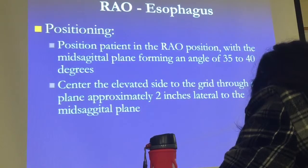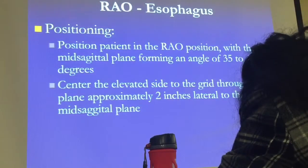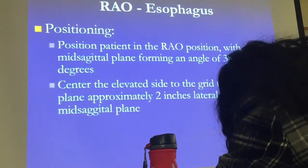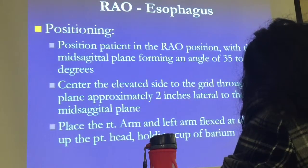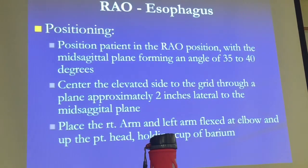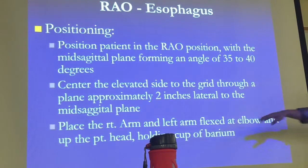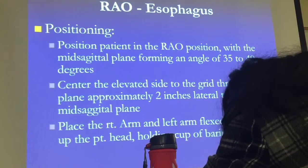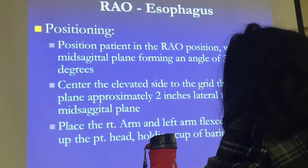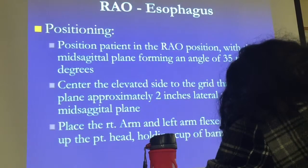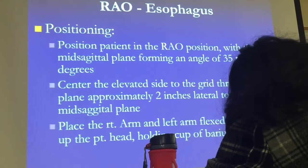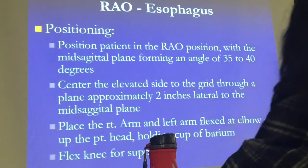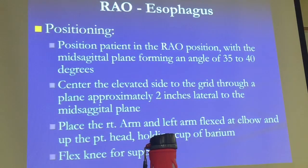Center the elevated side — go to the mid-sagittal plane and then go two inches lateral to that side. Place the right arm down by the hip. Flex the left elbow and bring the left arm up to the head, so the patient can hold the cup and drink with that left hand. Provide a pillow — a high pillow so they can drink; it's easier that way. Flex the knee for support.